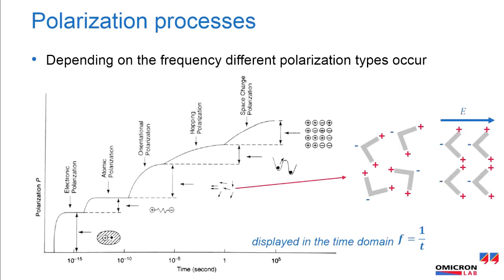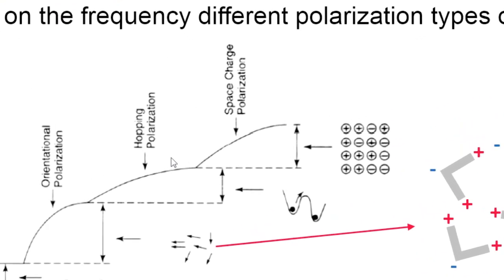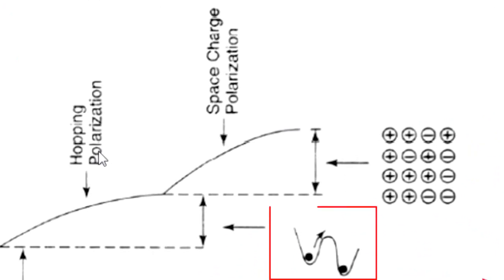Orientation or dipolar polarization is caused by alignment of permanent dipoles due to an electric field. The dipoles will rotate with the field direction. Hopping polarization is caused by movements in the hopping charge carriers.